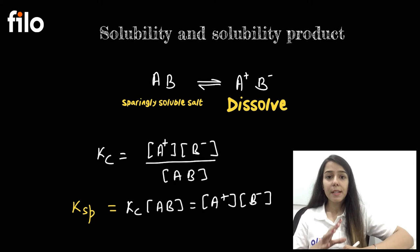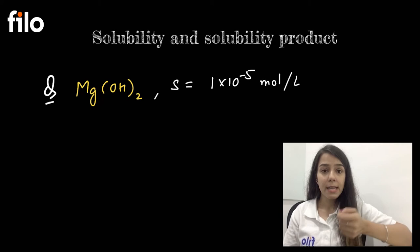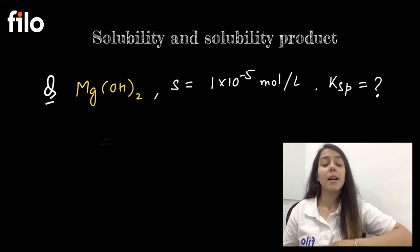Now let's try to generalize this whole solubility product with the solubility which is represented by S with the help of a question. The question is that we have a salt of Mg(OH)₂, and this solubility is given as 1 × 10⁻⁵. We have to tell what will be the solubility product and its value also. So first let's talk about the expression.